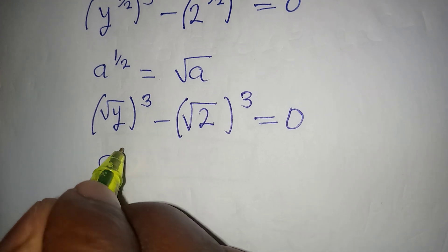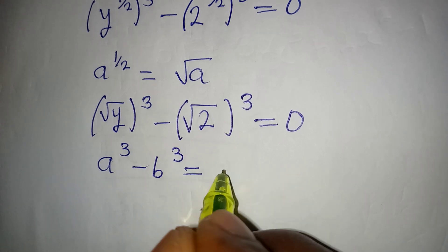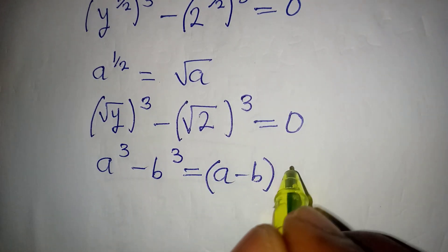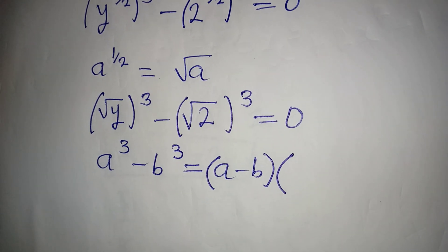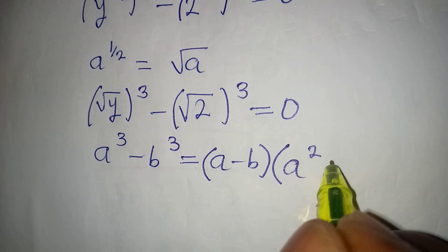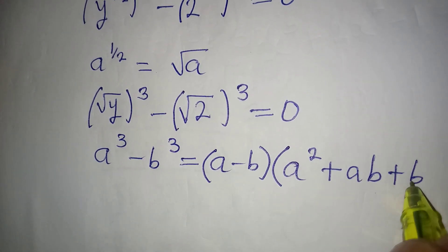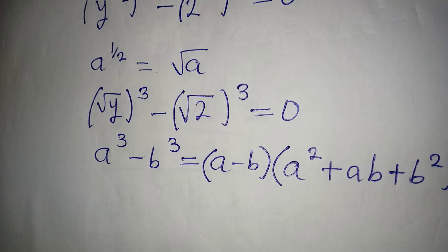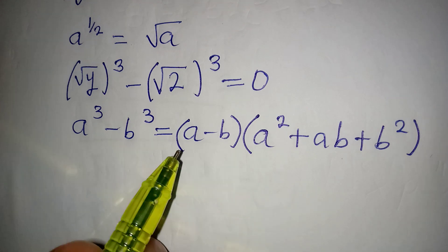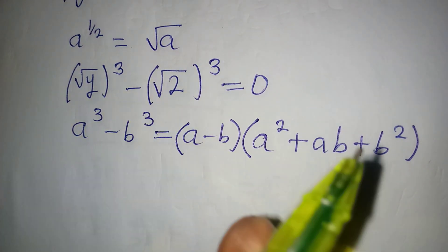Now let's look at the standard difference of cubes identity: if you have a to the power of 3 minus b to the power of 3, it is the same thing as a minus b, multiplied by a squared plus ab plus b squared. This is what we will have, and I'm going to apply the same standard here.